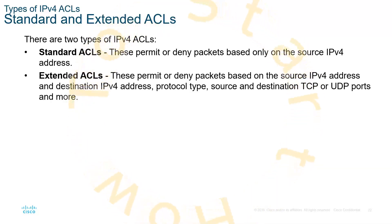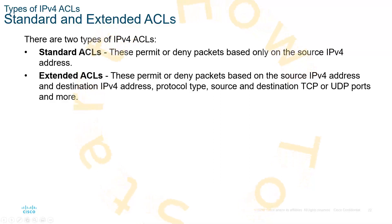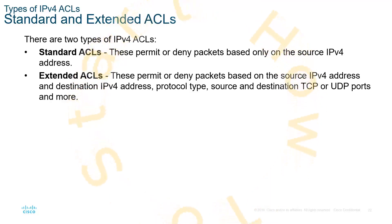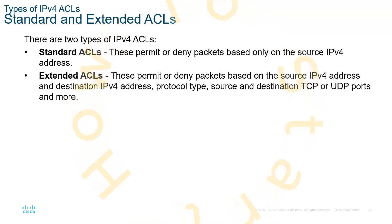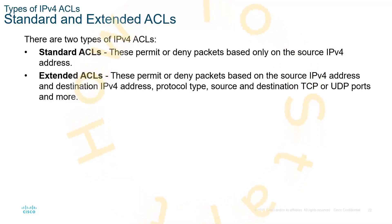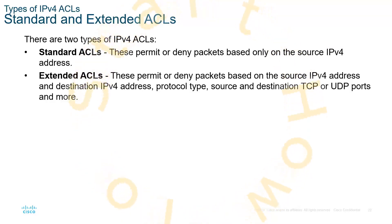Normally for an exam, we are looking at the extended form. Cisco has two specific rules about placement with these. The standard ACL does not look at the destination; therefore, you should place it as close to the destination network as possible. The rule of thumb for the extended ACL is, since it does allow for source and destination, you should place the extended ACL as close to the source of the traffic as possible. So: standard close to the destination, extended as close to the source as feasible.